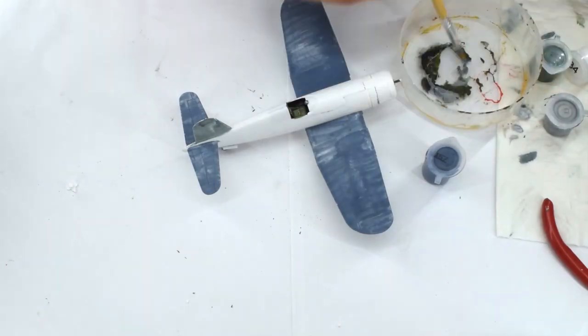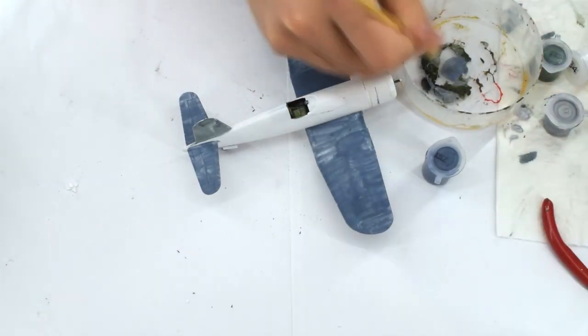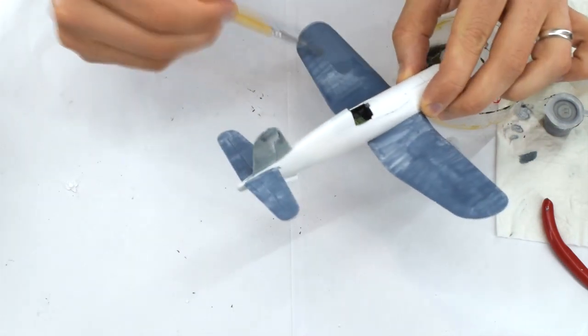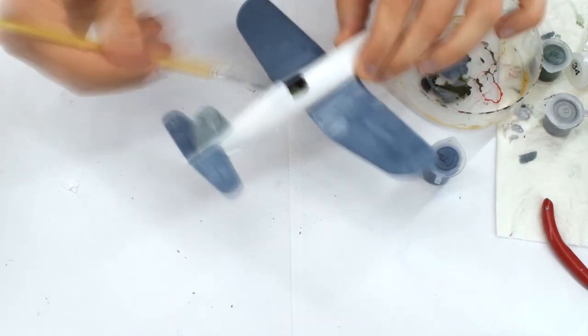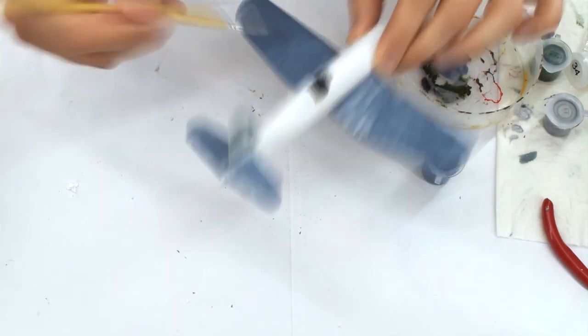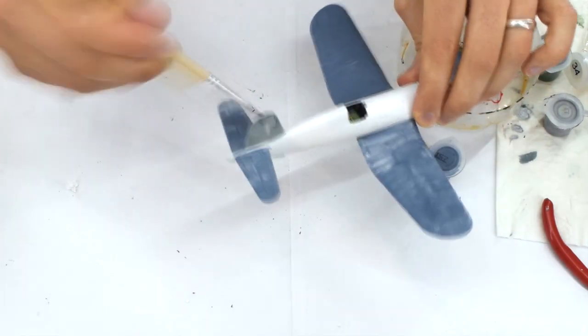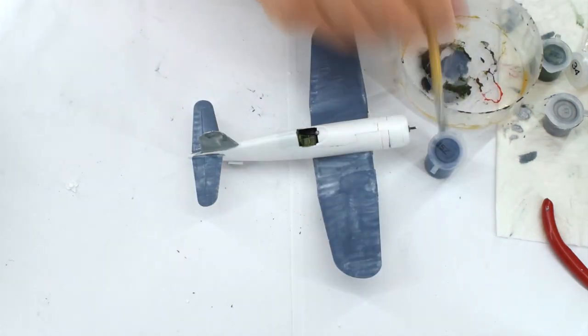Humbrol 157 azure blue matte acrylic was then used on the upper surfaces of the model. I originally thought that this paint would be a suitable top coat, but having added the lighter side color later, I found that it wasn't quite right. But I'll talk about that in a bit.